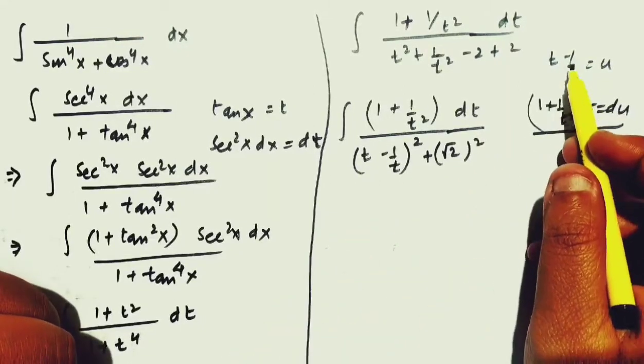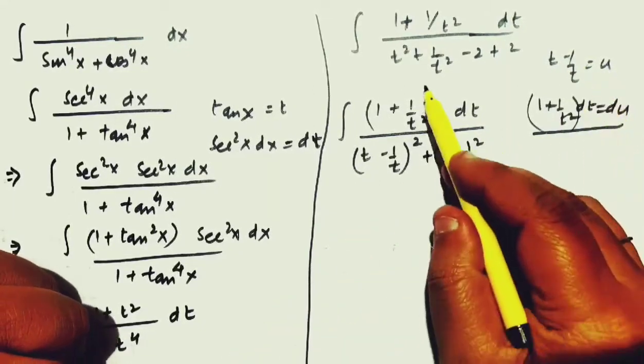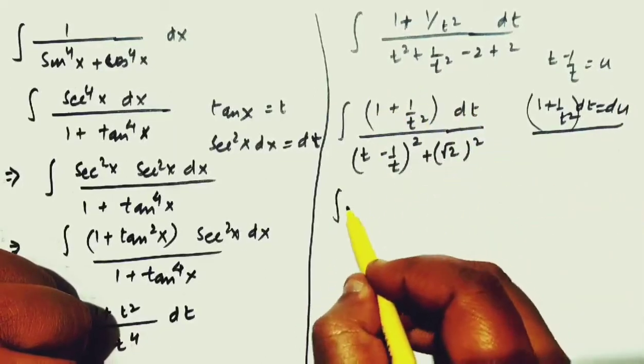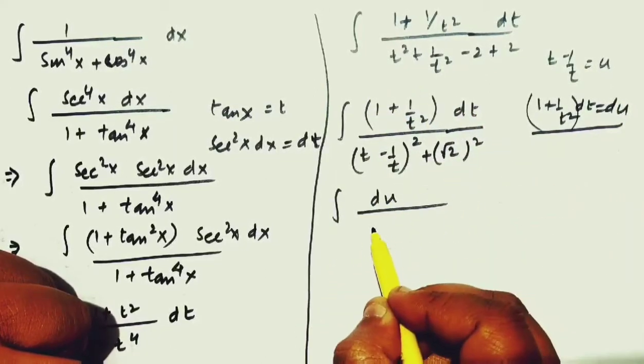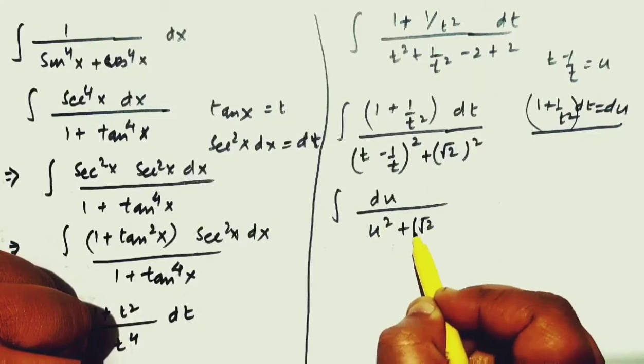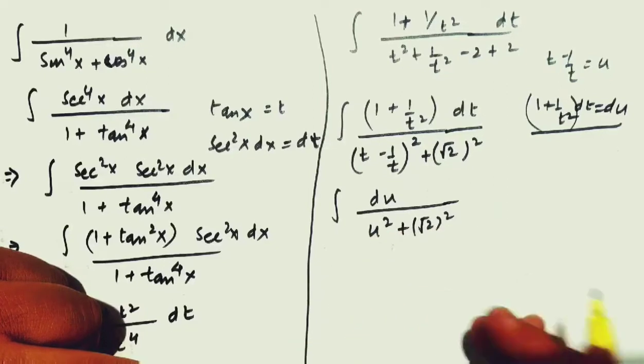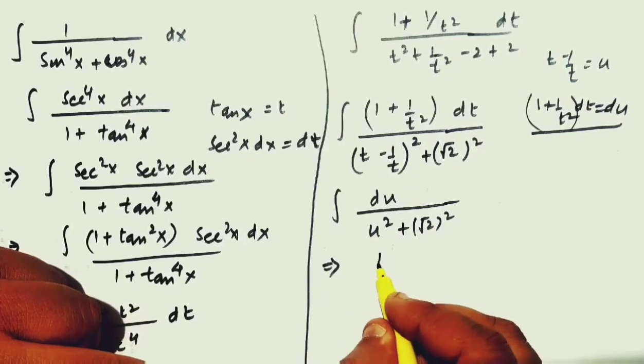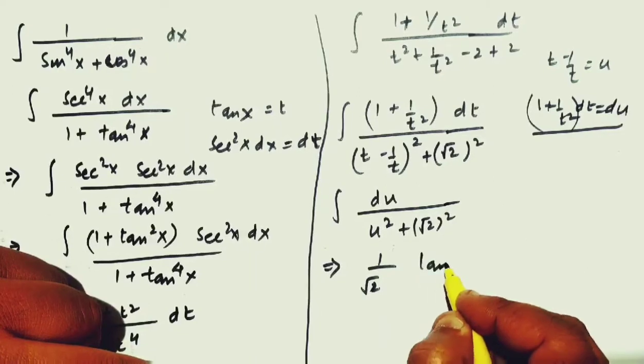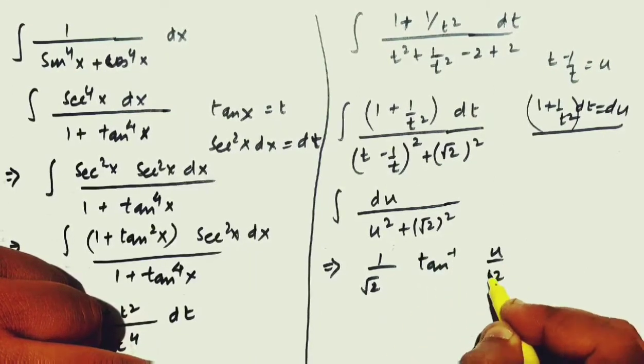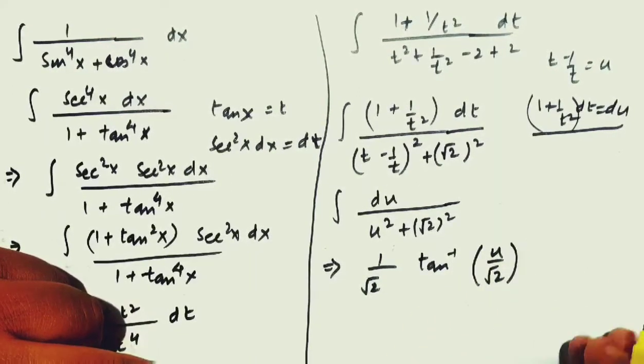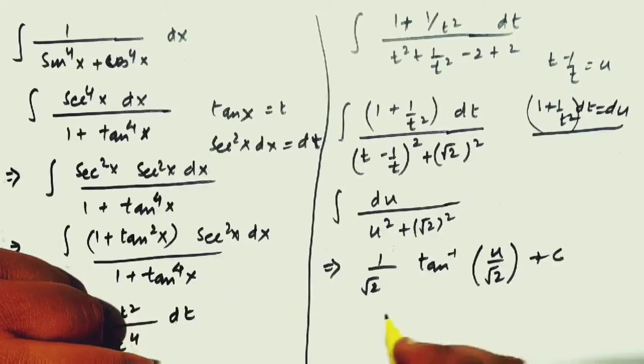So, t minus 1 by t ko humne u substitute kiya. 1 plus 1 by t square dt will be replaced by du. So, this will be u square plus square root of 2 square. Now, this is a formula in terms of tan inverse. Therefore, I will get 1 over a tan inverse x upon a, that is u by root 2. That is the formula plus a constant of integration.